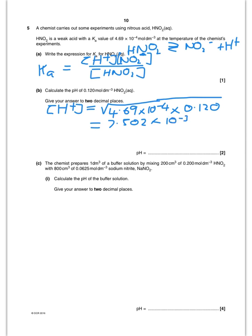Then using the pH expression — pH equals minus log₁₀ of the concentration of H⁺ — put that value in, take the log, change the sign, and you get pH = 2.12.